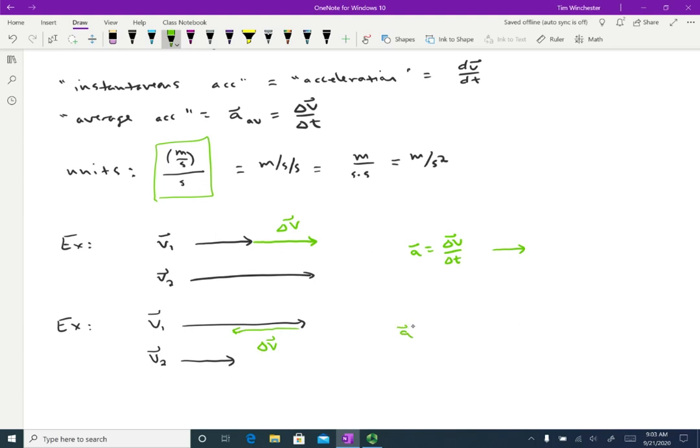So my delta V looks like this. And again, since A equals delta V over delta T, I'm just going to scale that by whatever the delta T is. So what does this mean? Well, we had an object that was moving quickly to the right, and then later it's moving slower to the right. So that means that the object has slowed down. And in this case, we found that that means that the acceleration is to the left. So if an object's moving to the right and slowing down, it's accelerating to the left. If an object is moving to the right and speeding up, it's accelerating to the right.